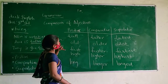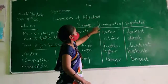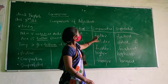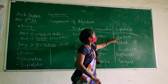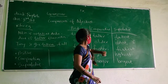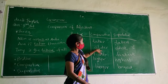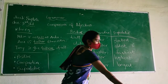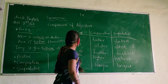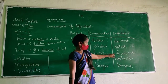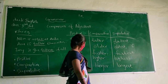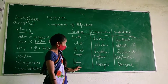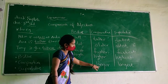In this diagram, see: positive, comparative, superlative. Tall, taller, tallest. Old, older, oldest. Fast, faster, fastest. High, higher, highest.